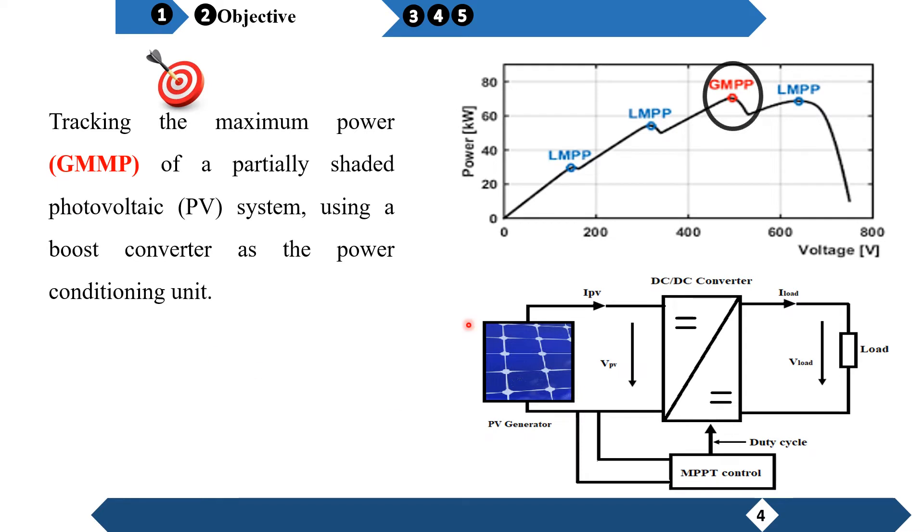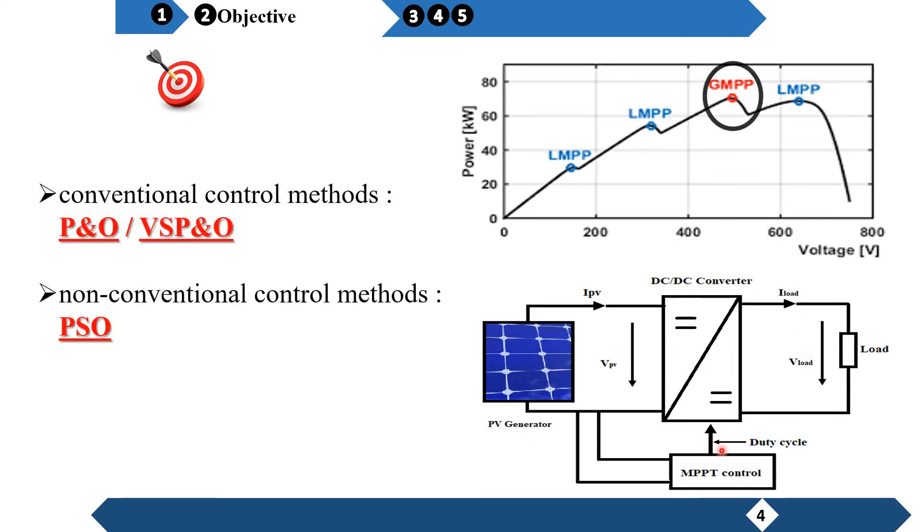We are interested to track the maximum power GMPT of a partially shaded photovoltaic system using a BOTS converter as the power conditioning unit. To meet this objective, different conventional methods as P&O and VSP&O and non-conventional control methods as PSO have been proposed.